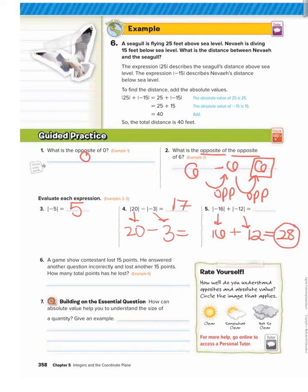Number six: A game show contestant lost 15 points. He answered another question incorrectly and lost another 15 points. How many total points has he lost? So he lost 15, represented as negative 15. He lost another 15, so that's another negative 15. To find the total points lost, we want to use addition and absolute value.